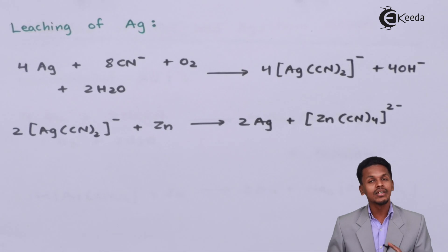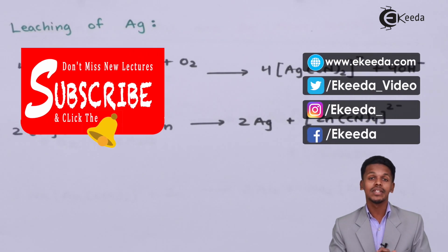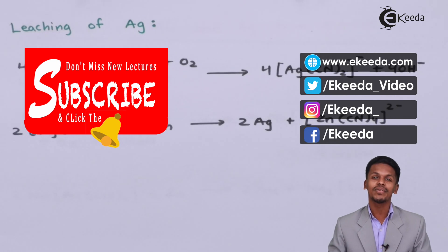These are the 2 methods that I have discussed: one was for leaching of gold and one is leaching of silver. Thank you friends for watching this video. I hope you have understood this video very clearly and I hope I will see you next time. Till then, don't forget to subscribe to Ikeda channel. Thank you so much.